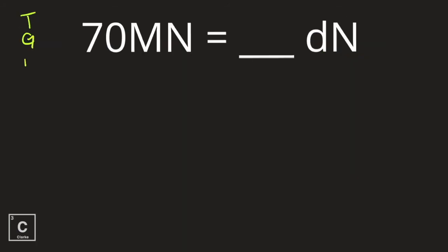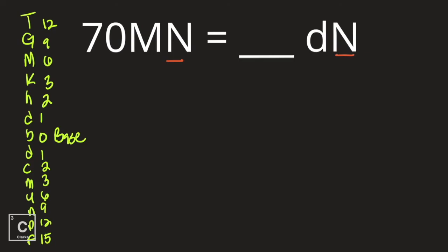Let's do another one. The great mighty King Henry died by drinking chocolate milk under nice pretty flowers. Base unit is 0. 1, 2, 3, 6, 9, 12. 1, 2, 3, 6, 9, 12 and 15. Let's look at this problem. We have 70 mega newtons. Newton, that is another physics unit. So we've got capital M, that's mega. And we've got little d, deci again. So we're going from a prefix that's larger than the base unit to a prefix that's smaller than the base unit.